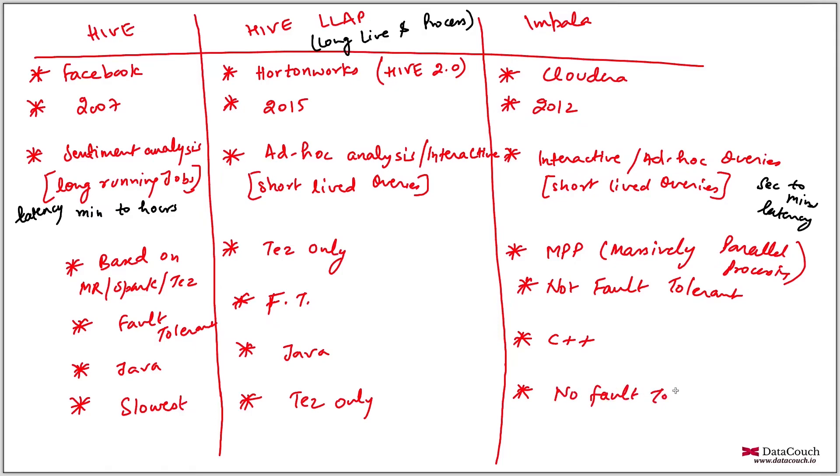So in Hive LLAP updates are allowed on ORC file, but if you see in Impala, no data update functionality, no data update functionality available. So hope this gives you an idea which technology to choose when.